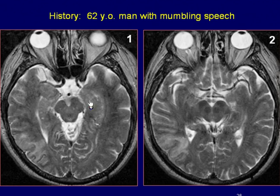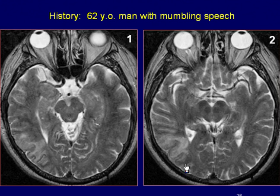A 62-year-old man with dysarthria. Axial T2-weighted image of the brain reveals a hyper-intense lesion involving both grey and white matter in the right posterior temporal region.